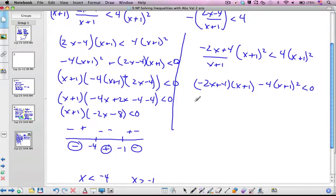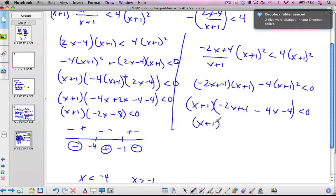I'm going to factor out again the x plus 1. And that leaves me with a negative 2x plus 4 minus 4x minus 4 less than 0. So x plus 1, negative 6x is less than 0.